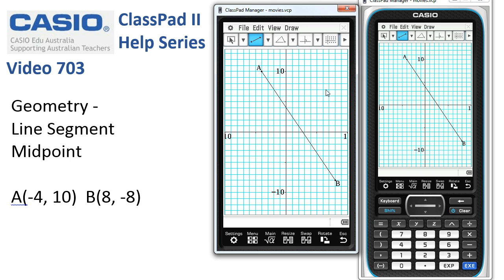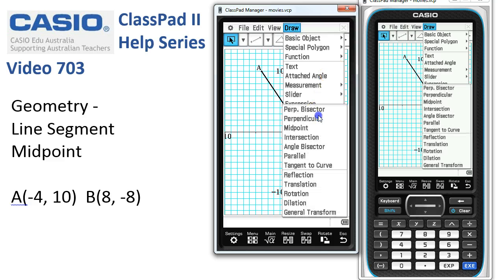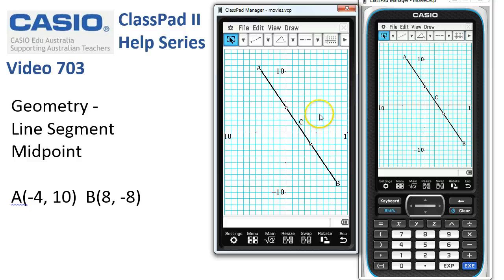Now, once we've got the line drawn, I need the select tool. And I'm going to tap onto the line to select it. And then use the draw, construct, and midpoint option. And as soon as I release that, the point C is being popped onto the middle of this line segment. So I'll deselect, tap onto C.